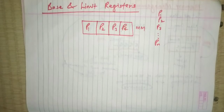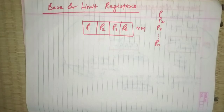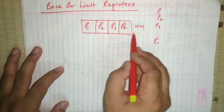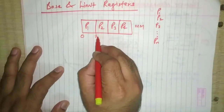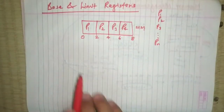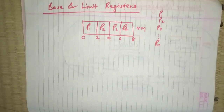Now we need to take care of the addresses, because we have to explain the base and limit registers. First you need to understand the basic concept behind process addresses. For example, your main memory addresses start from zero — say two, four, six, and eight. These are not the actual addresses; I am just considering them for explanation and understanding purposes.